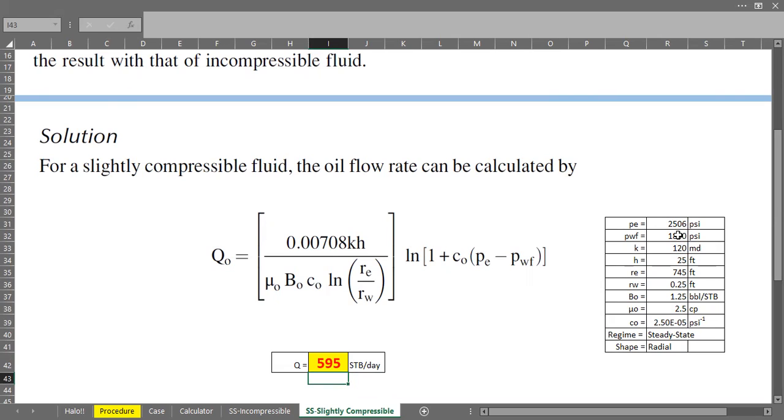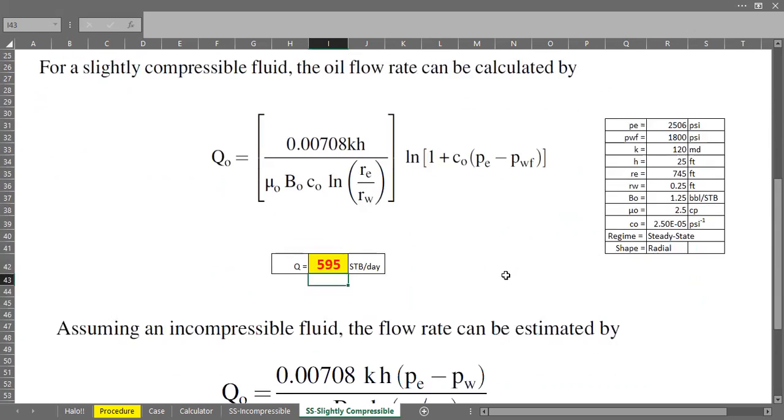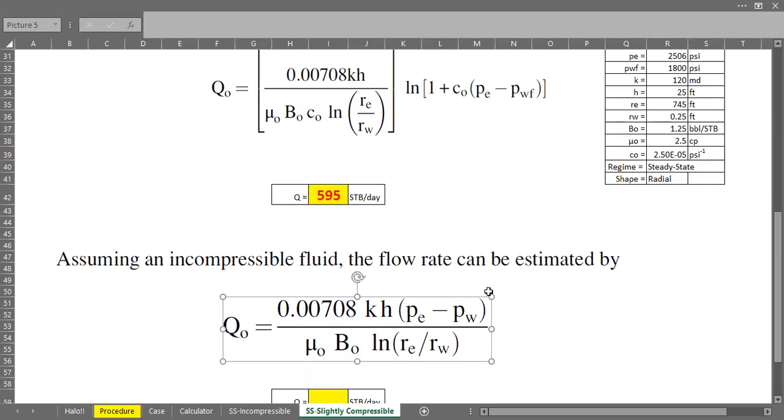The flow rate assuming slightly compressible fluid is 595 stock tank barrel per day. So we can continue with the next case.